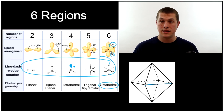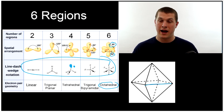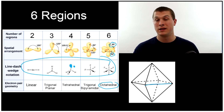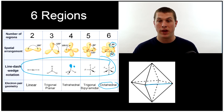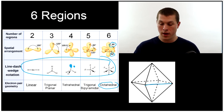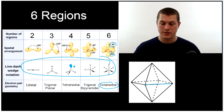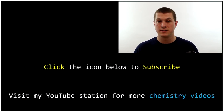Electron geometry describes where our electrons are — bonds or lone pairs — and the angles between regions of electron density. In the next video, we'll look at molecular geometry, where we replace some atoms with lone pairs and examine the resulting orientation of atoms and their names. Check out the video on molecular geometry linked below. Thank you for watching this episode of Real Chemistry — got any questions? Ask them below.